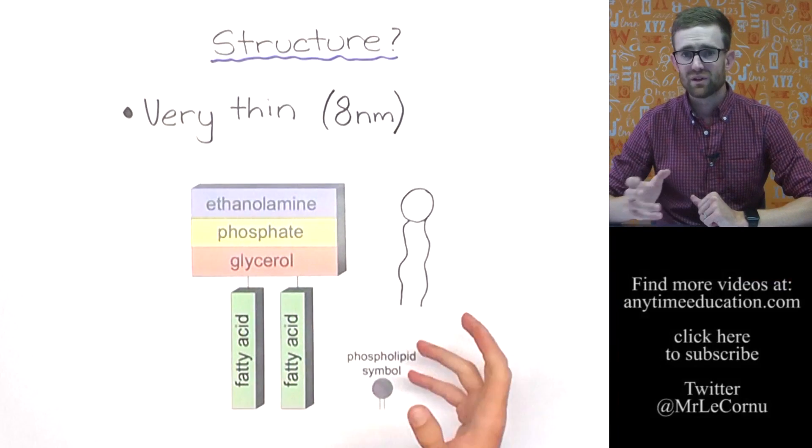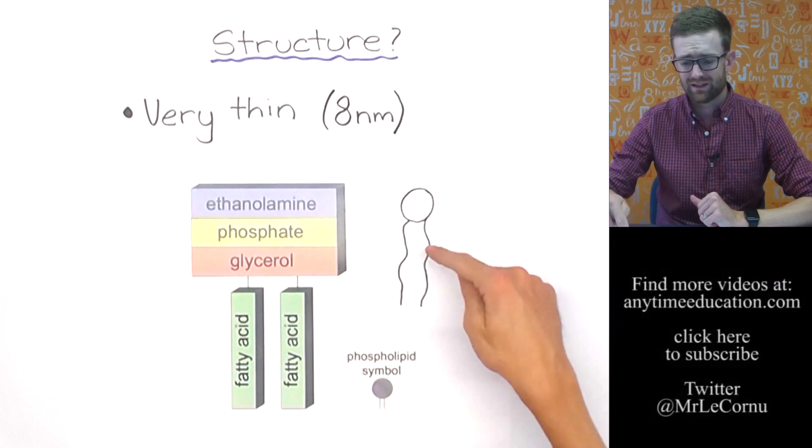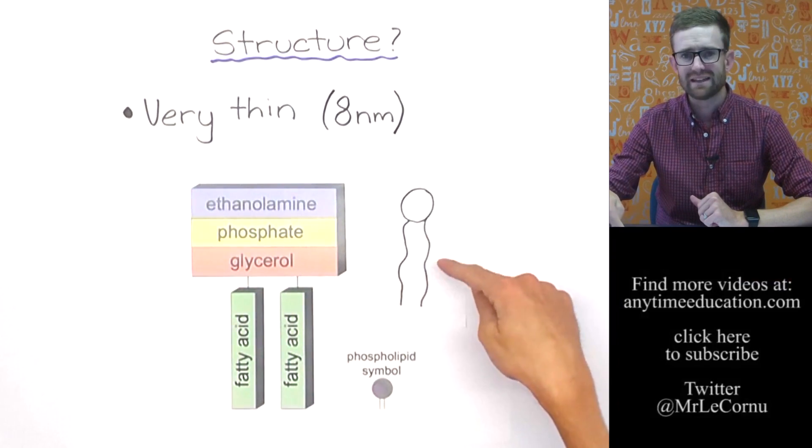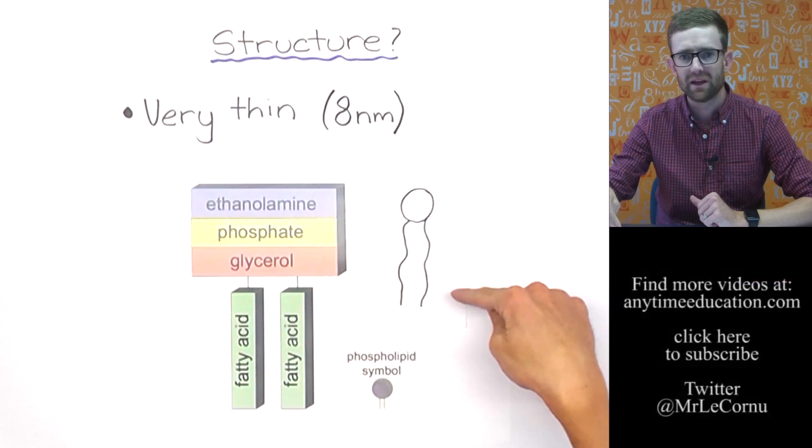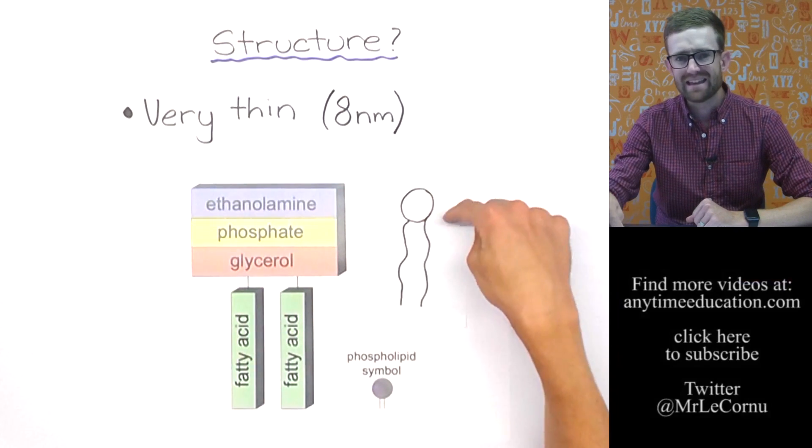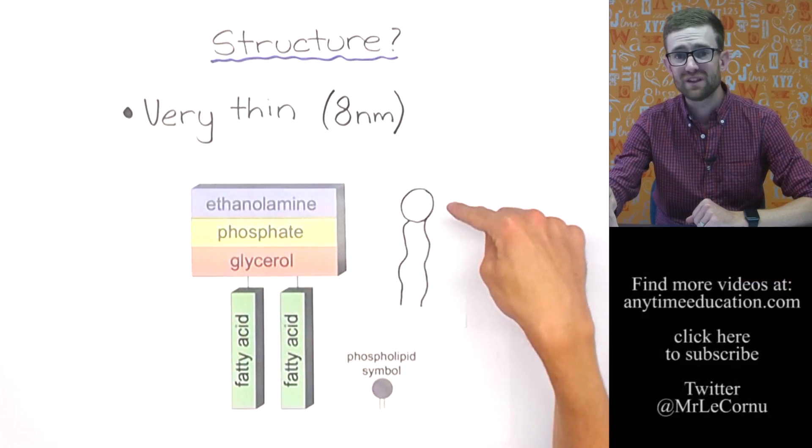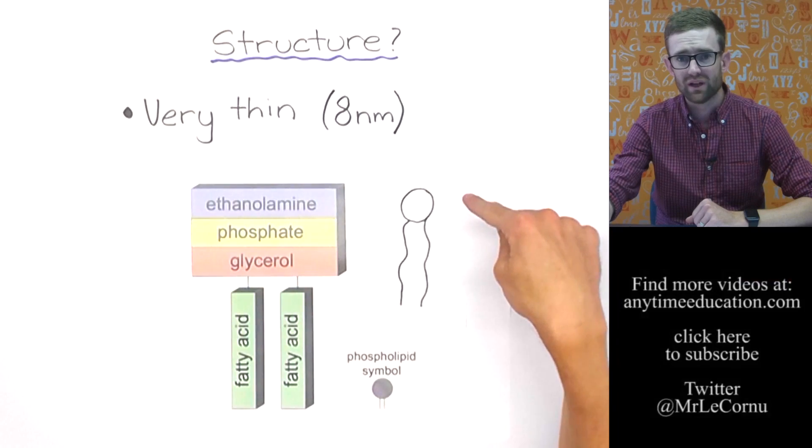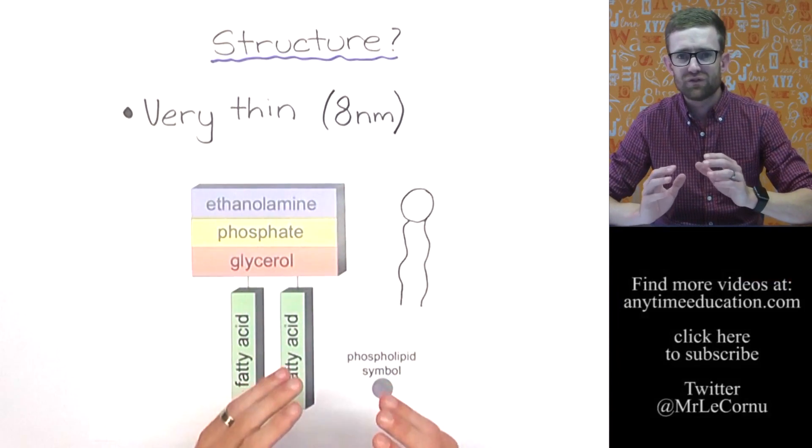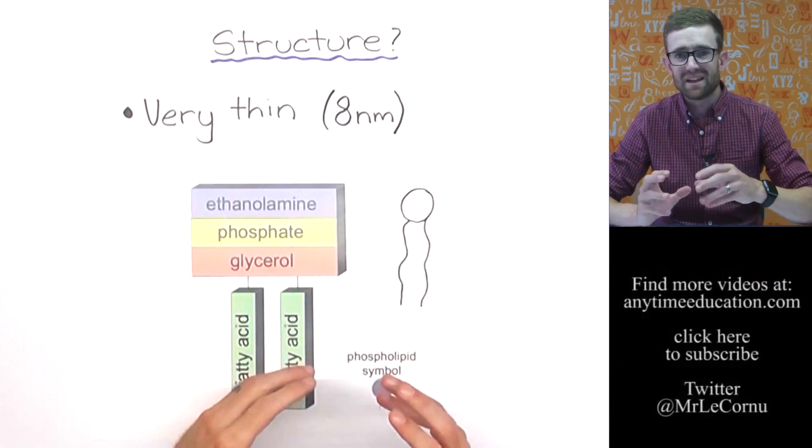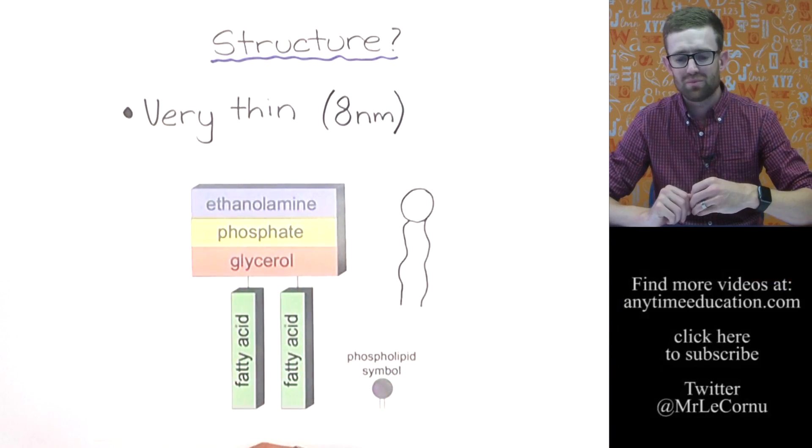So the phospholipid, let's remind ourselves that the tail end is what we call hydrophobic—it hates water, it repels water. But the head, the phosphate head, is hydrophilic—it attracts water. And it's that very feature that makes the phospholipids so great to form the cell membrane.